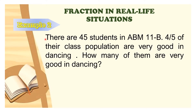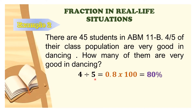Example number 2. This problem is the same as the previous one, but there is a value specified for the total number of students in the class. There are 45 students in ABM 11B, and 4 fifths of their class population are very good in dancing. We divide the numerator by its denominator: 4 divided by 5 equals 0.8, then multiply by 100, giving us 80%.